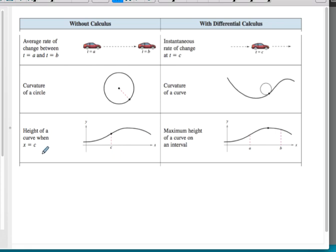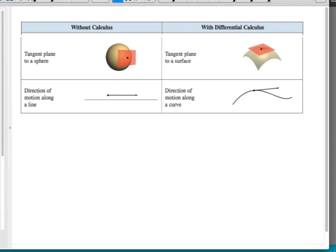Without calculus, we can find a height of a curve at C, meaning we can find a Y value at C, which is similar to finding f(c). But with calculus, we can actually find the maximum height on a particular interval. And obviously, some of these are things that you may have been able to do with a calculator that you couldn't do by hand. Without calculus, we can find a plane that is tangential to a sphere. But with calculus, we can find a plane that is tangential to any surface, which has a lot of applications in science and engineering.